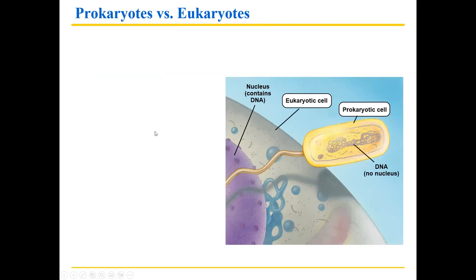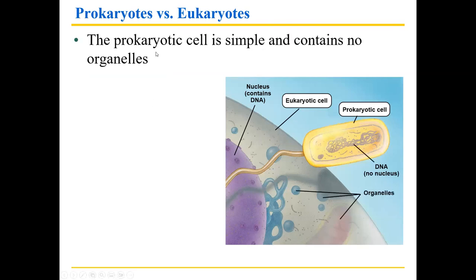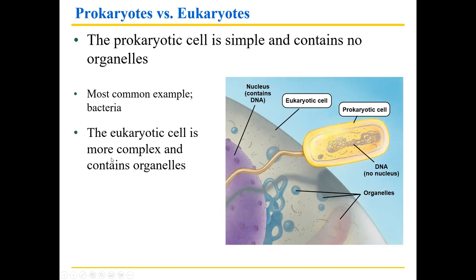Talking about prokaryotic versus eukaryotic cells — the prokaryotic cell is simple and contains no organelles. Here is a prokaryotic cell — this is a bacterium. Note it's much smaller than the large eukaryotic cell in the background. It does contain DNA, it has a cell wall, and can have structures like flagella. The key is they're much smaller, simpler, and don't have organelles. The eukaryotic cell is more complex — it contains organelles like mitochondria, lysosomes, and a nucleus, and is almost always larger. The eukaryotic cell keeps its DNA inside of a nucleus. Plants and animals are good examples of eukaryotes.